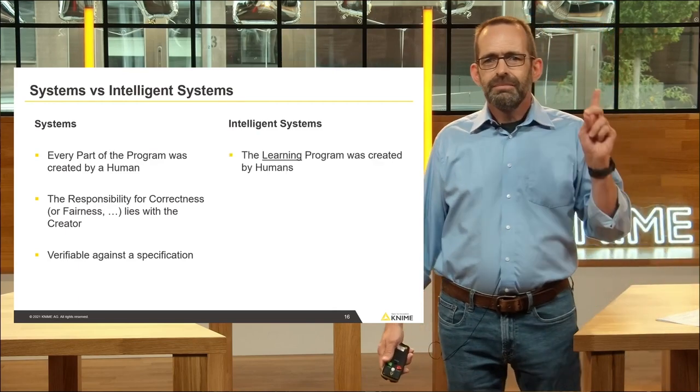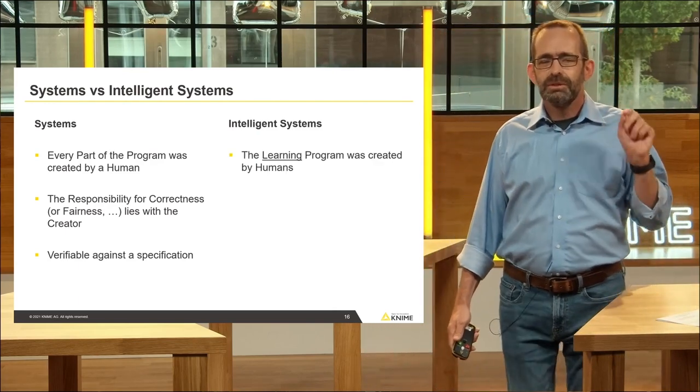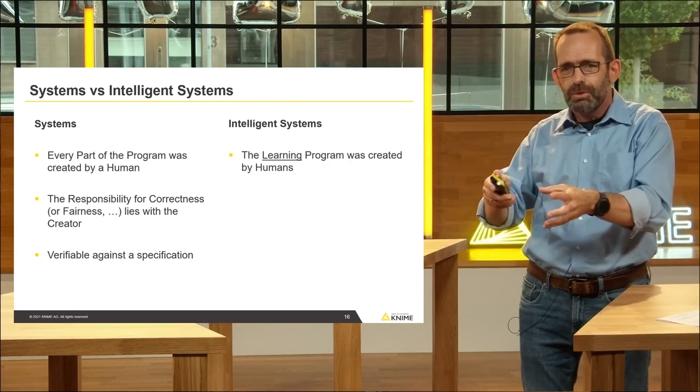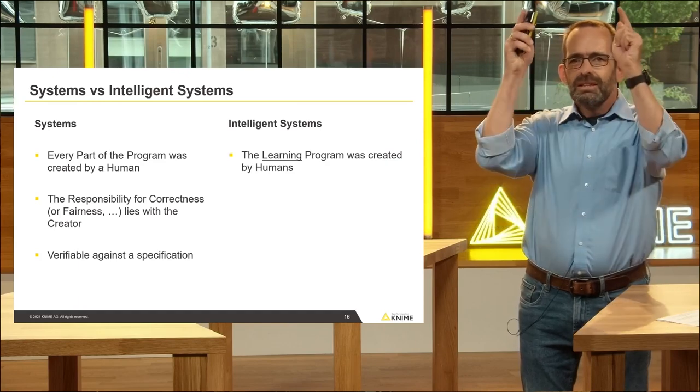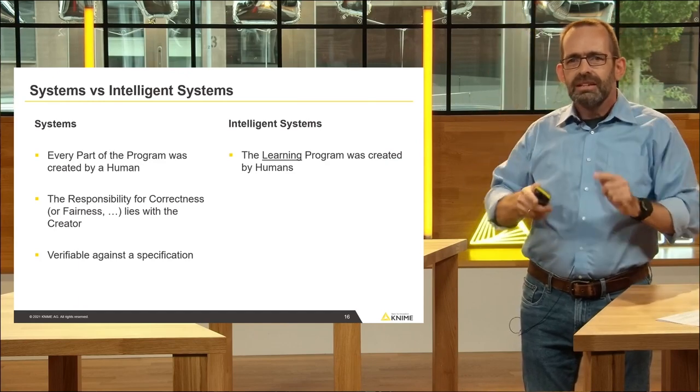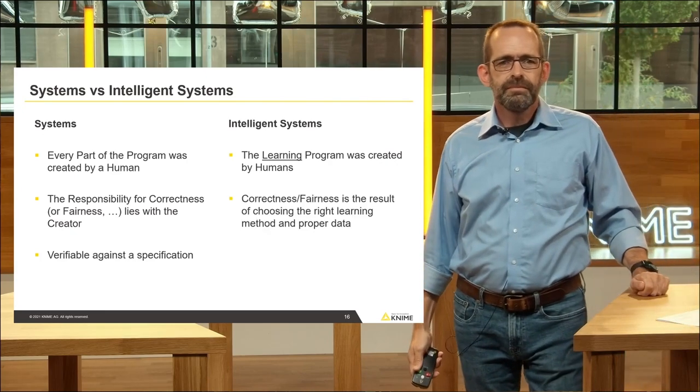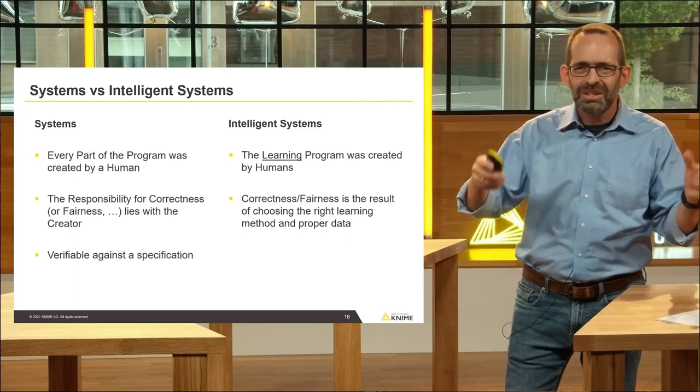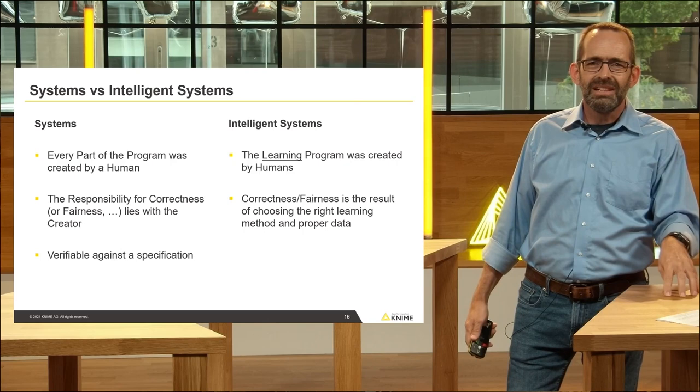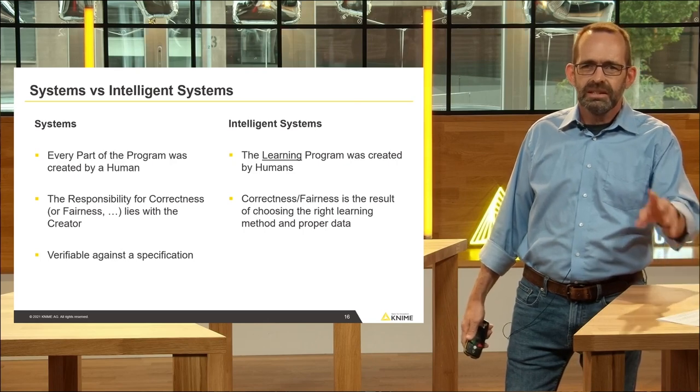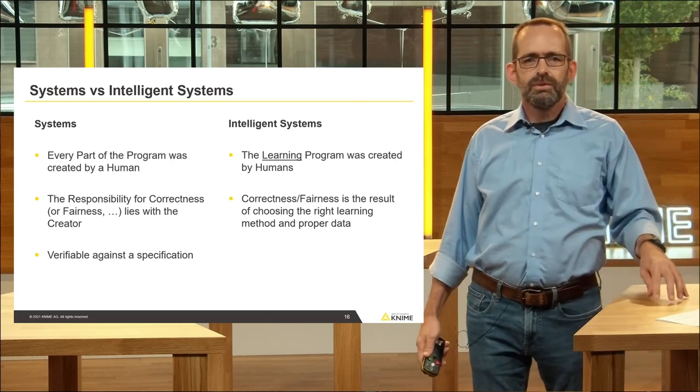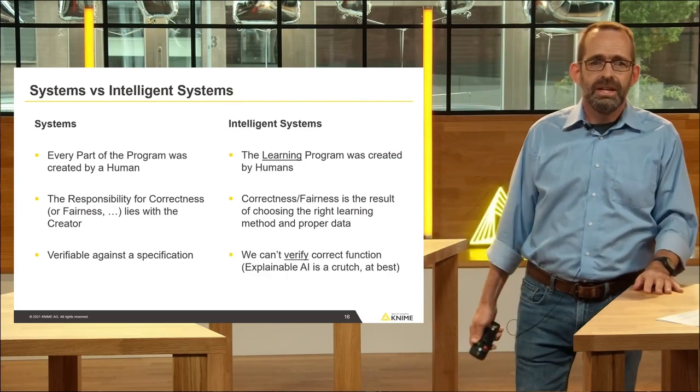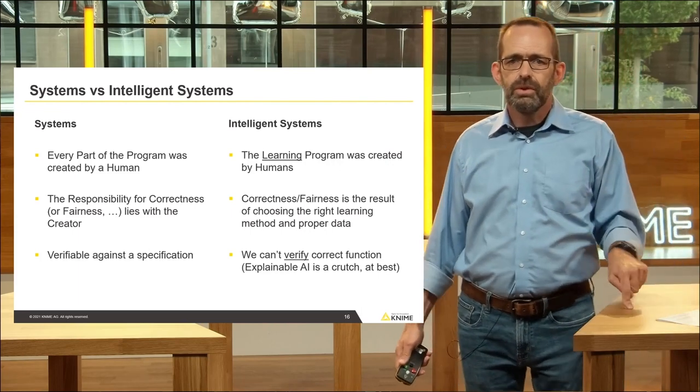Intelligence systems, on the other hand, the learning program was created by humans. So the algorithm, the method that looks at data and does something, it derives this, the little robot that I depicted, the intelligence system. The method there that does that, that creates the system, was created by humans. The correctness and the fairness or whatever else you're interested in making sure the system observes is the result, not any more of those people writing that, and I'll show you an example in a second, but it's really the result of choosing the right learning method and the proper data. And again, I'll show you in a second why that matters.